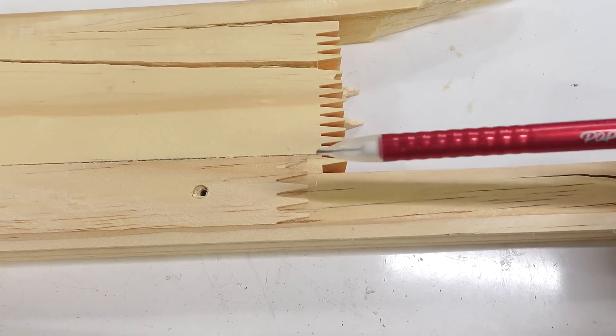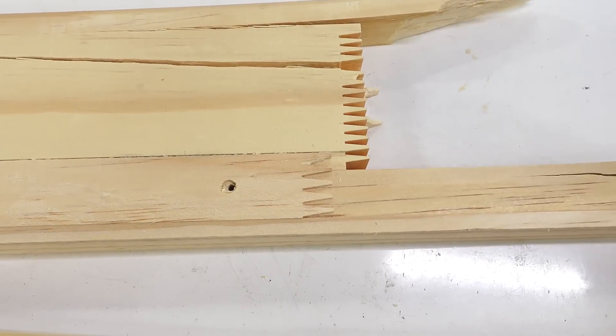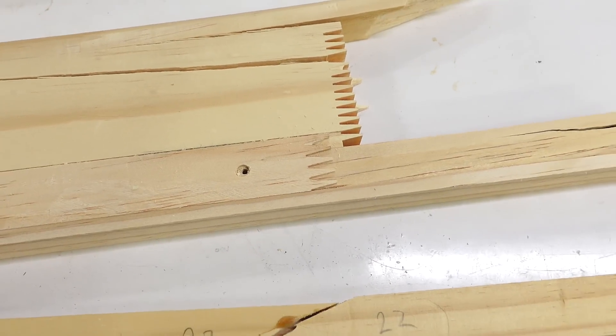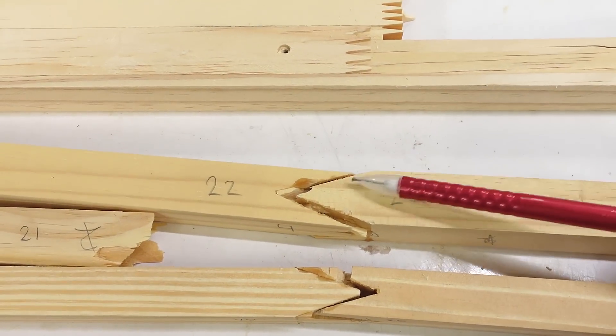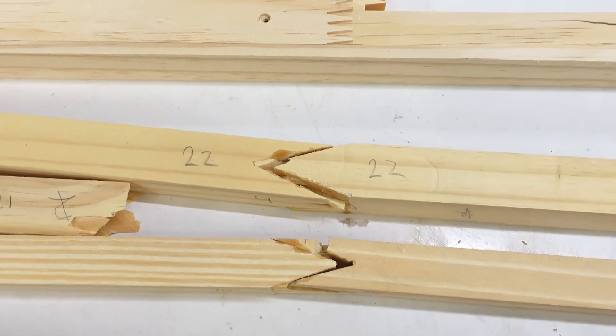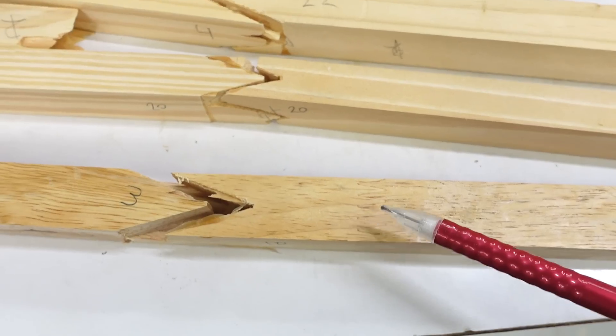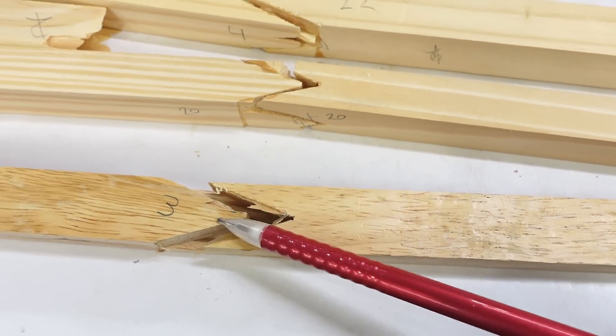I guess the summary is these finger joints in the softwood were not as strong as I thought they would be in the samples I had, and my V joints were if anything better than that. Although in the hardwood, the finger joints, there's one right here, outperformed my V joints.